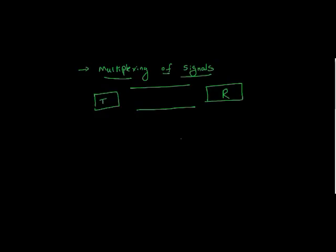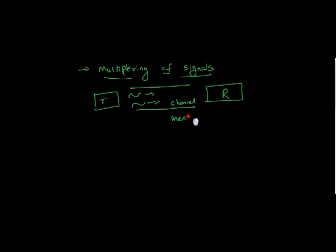The second point is for multiplexing of signals. In a typical communication system block diagram, we have a transmitter and a receiver, and in order to transmit any signal we need to have a communication channel. With the help of modulation, we can use another technique called multiplexing. With this technique, we can transmit more than one signal through the same channel without any interference. One signal can go through the channel, and another signal through the same channel, and you can be sure there won't be any disturbance — the signals will not interfere with each other, so the message will be intact.